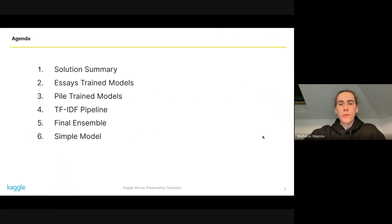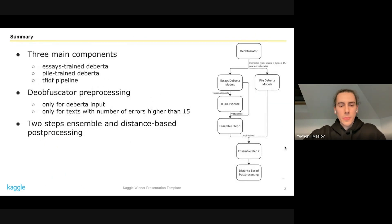I will walk you through all parts of our solution and how we merged everything together. In summary, we have three main components in our solution: DeBERTa models trained on Persuade and Persuade-like generated essays, the data model strength on pile pajama continuations, and the third one is a TF-IDF pipeline.